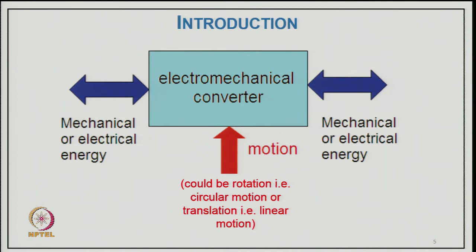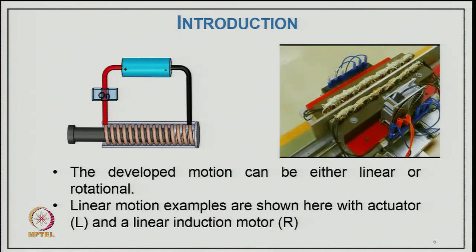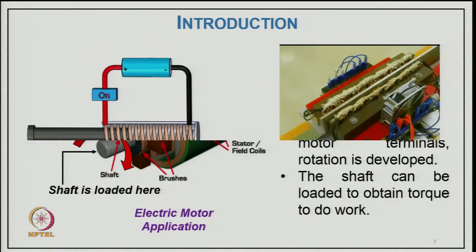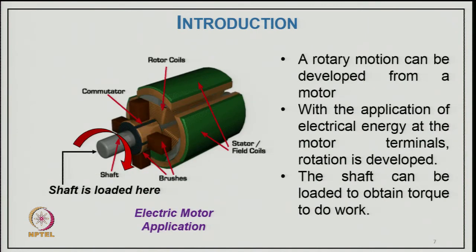One side is electrical energy and the other side is mechanical energy, and the device converts from one form to another. Most devices are capable of a reversible process of such energy conversion. The developed motion can be either linear or rotational. Linear motions are exemplified by the actuator on the left and linear induction motor on the right. A typical example of an electric motor application is where rotary motion is developed from a motor with electrical energy applied to obtain torque to do mechanical work.